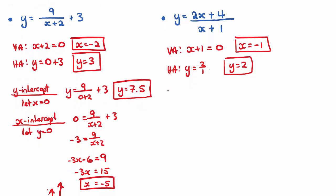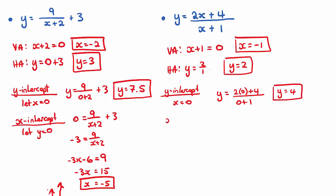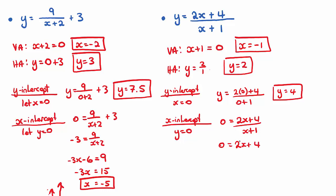For the Y-intercept, we let X equal 0: Y equals (2 times 0 plus 4) over (0 plus 1), which is 4 over 1, so Y equals 4. For the X-intercept, we let Y equal 0: 0 equals (2X plus 4) over (X plus 1). Multiplying out gives 0 equals 2X plus 4, so negative 4 equals 2X, and X equals negative 2.